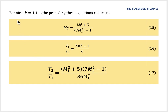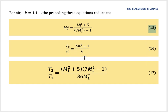To simplify calculations, since experiments are typically conducted using air with K = 1.4, we substitute K = 1.4 into all equations. This gives equation 15: M₂² = (M₁² + 5)/(7M₁² − 1). For pressure, equation 16: P₂/P₁ = (7M₁² − 1)/6. For temperature ratio, equation 17: T₂/T₁ = (M₁² + 5)(7M₁² − 1)/(36M₁²).